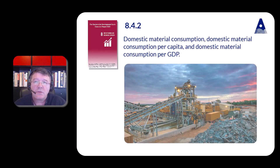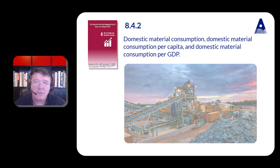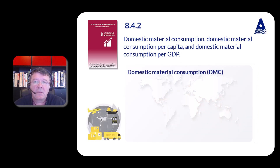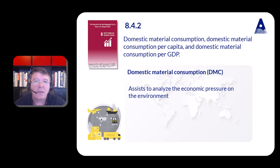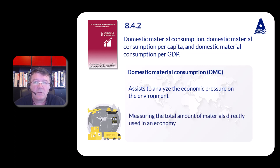Domestic material consumption assists to analyze the economic pressure on the environment, but when the economy is oriented towards traded goods, the material footprint is a much better indicator. Domestic material consumption, or DMC, is one of the well-known indicators that assists to analyze the economic pressure on the environment by measuring the total amount of material directly used in an economy, excluding indirect flows.